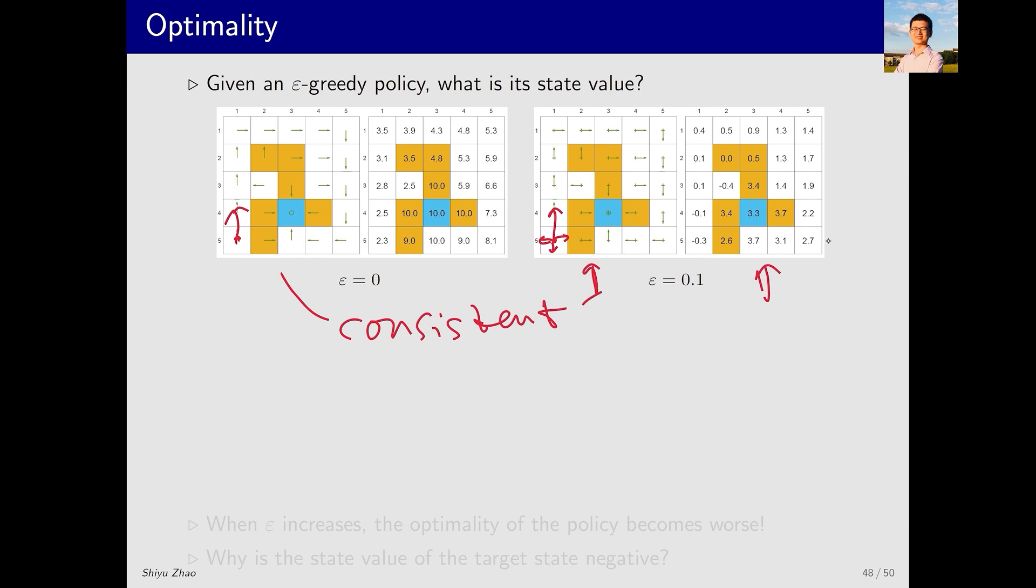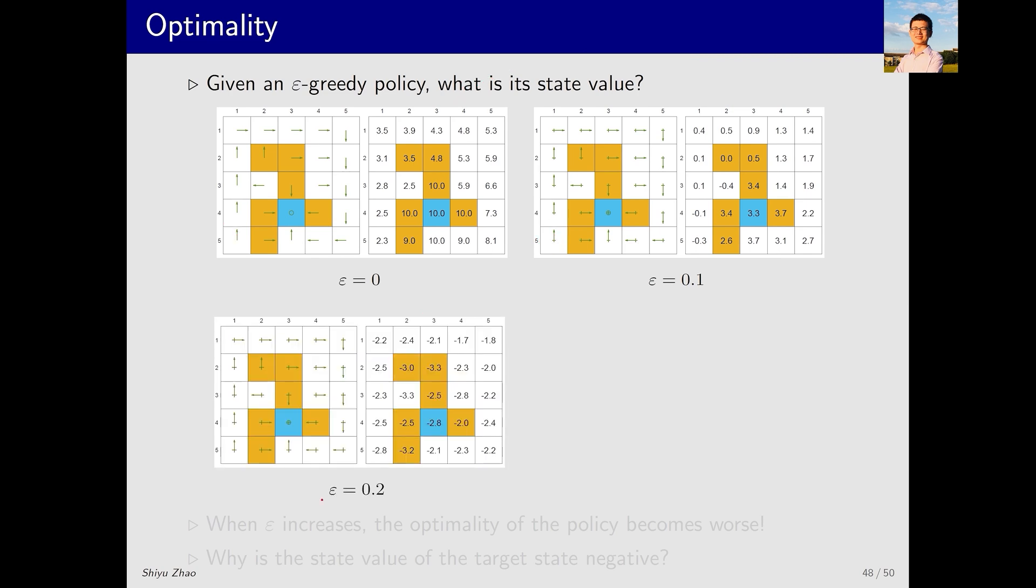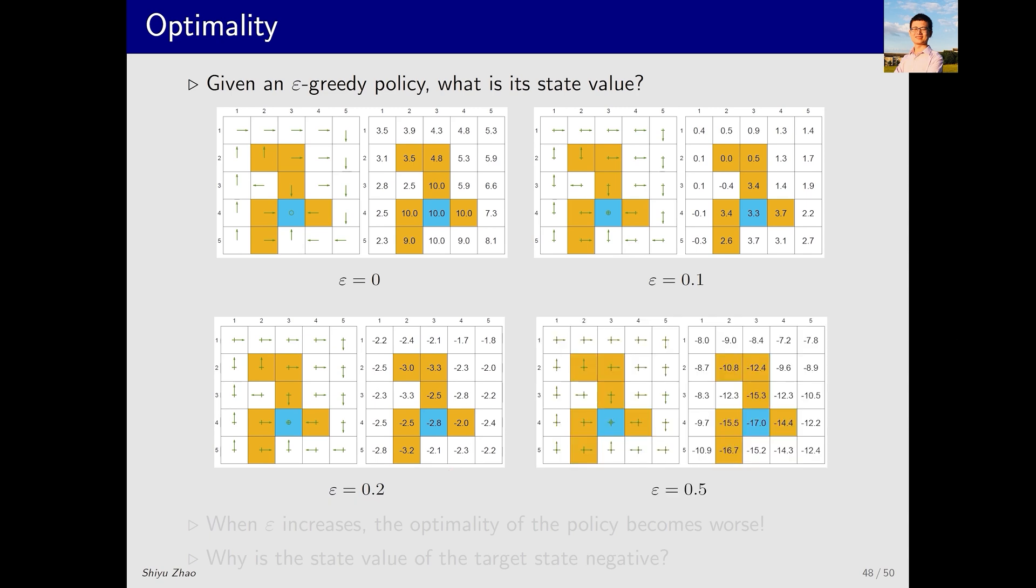The state value calculated in this case is lower than the first. Why does this happen? That is because actions that are not good may be taken. Increasing epsilon decreases the state value, and when epsilon equals 0.5, many values have turned negative. State value is a metric for evaluating a policy.